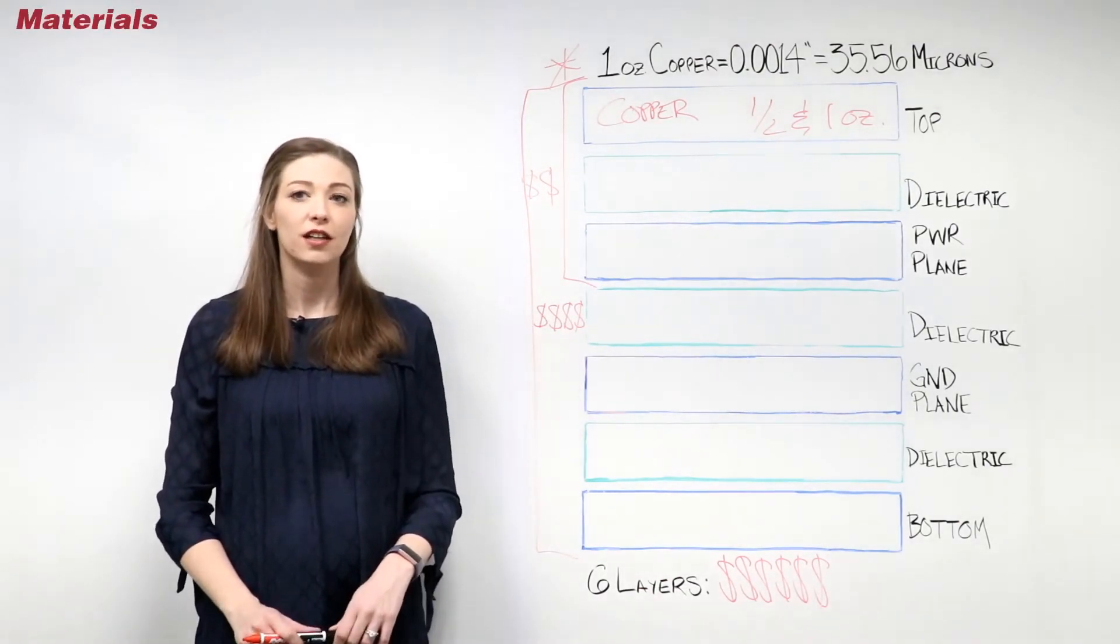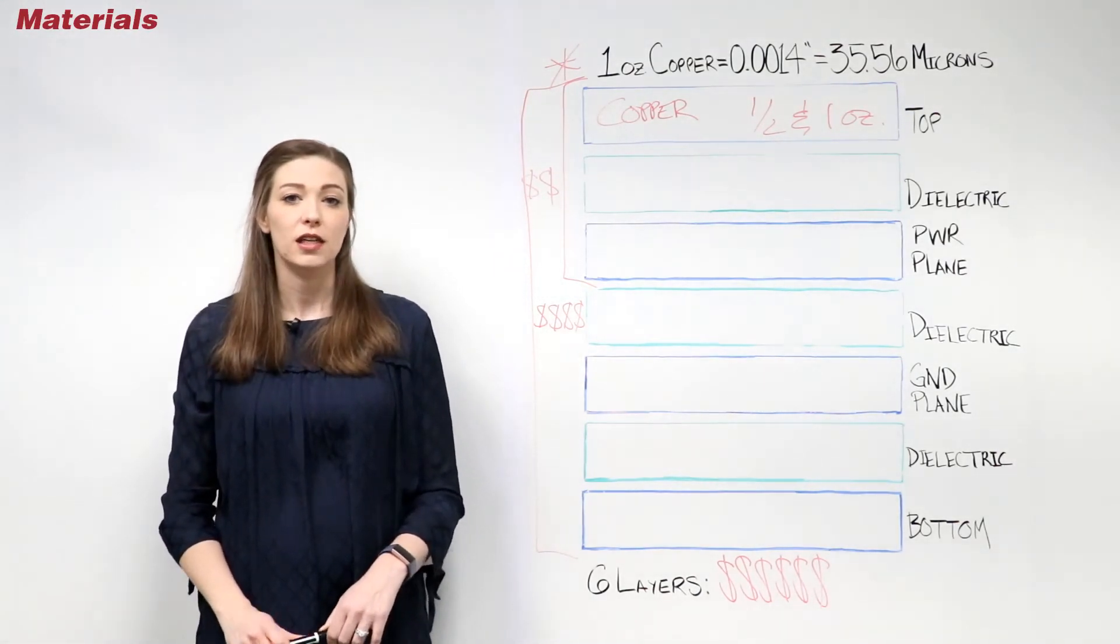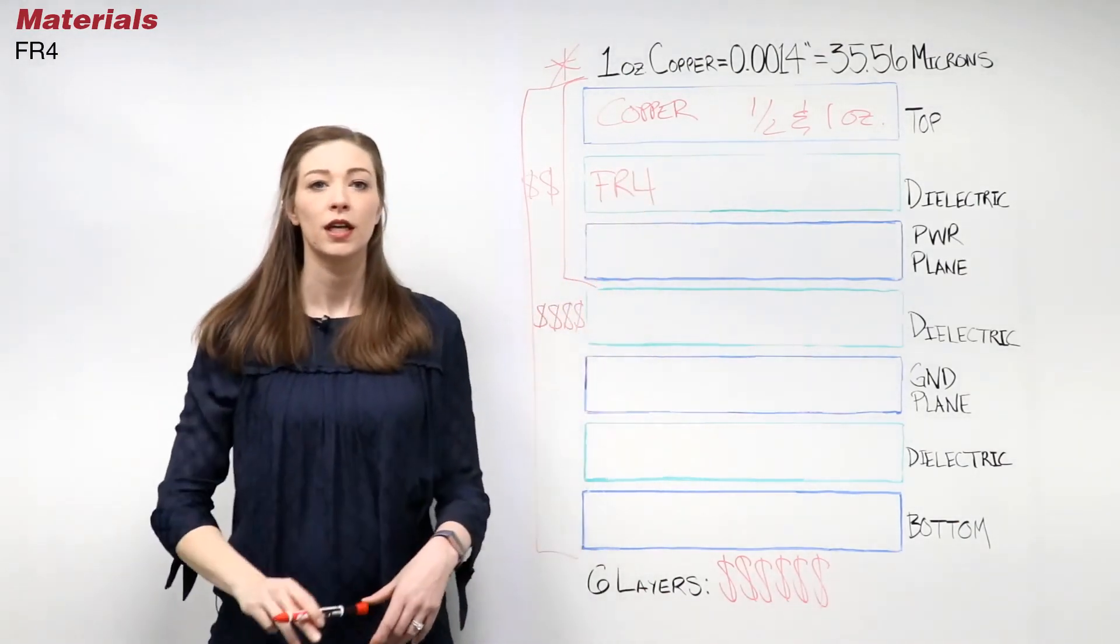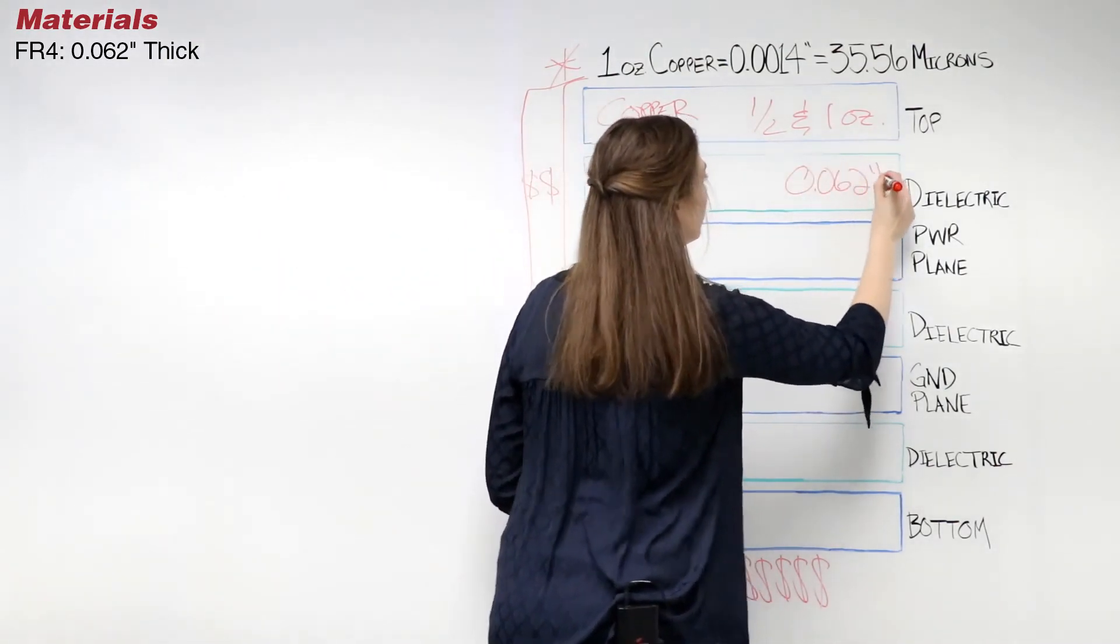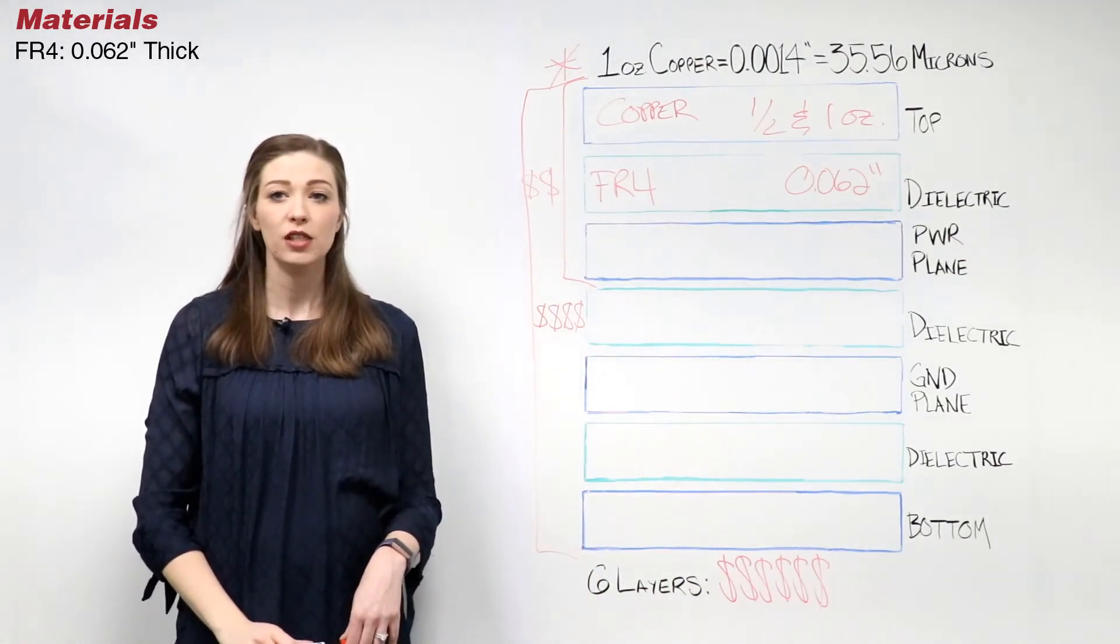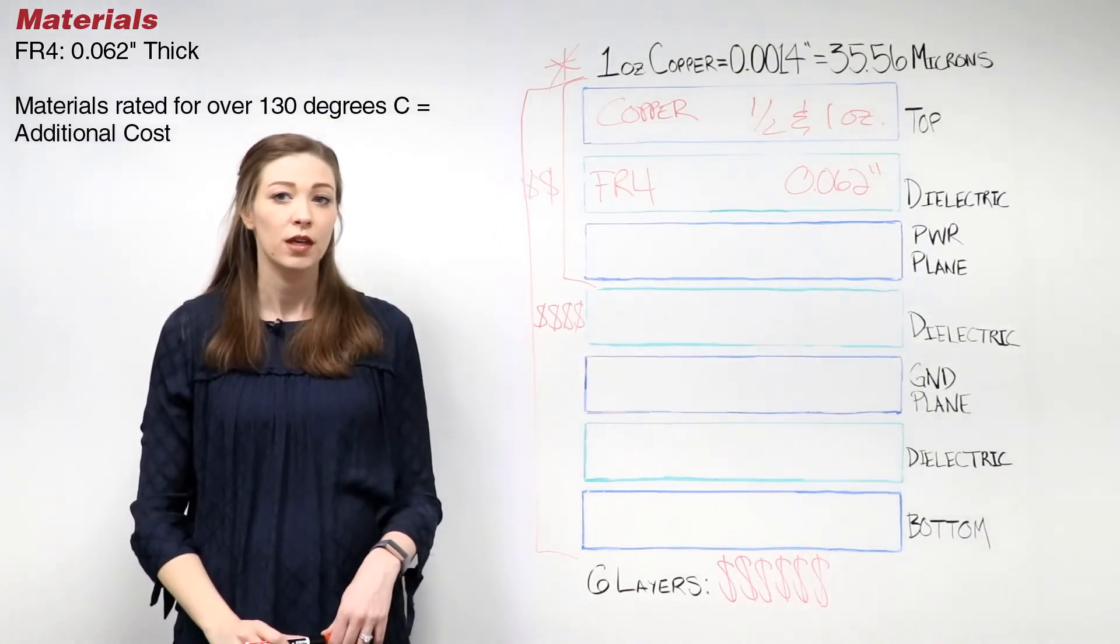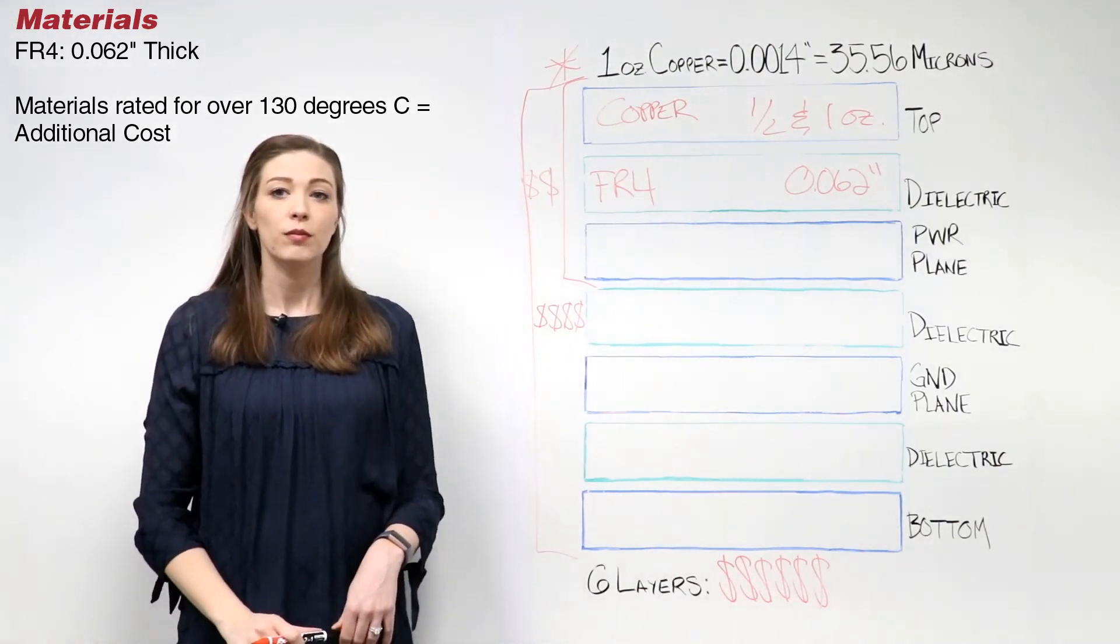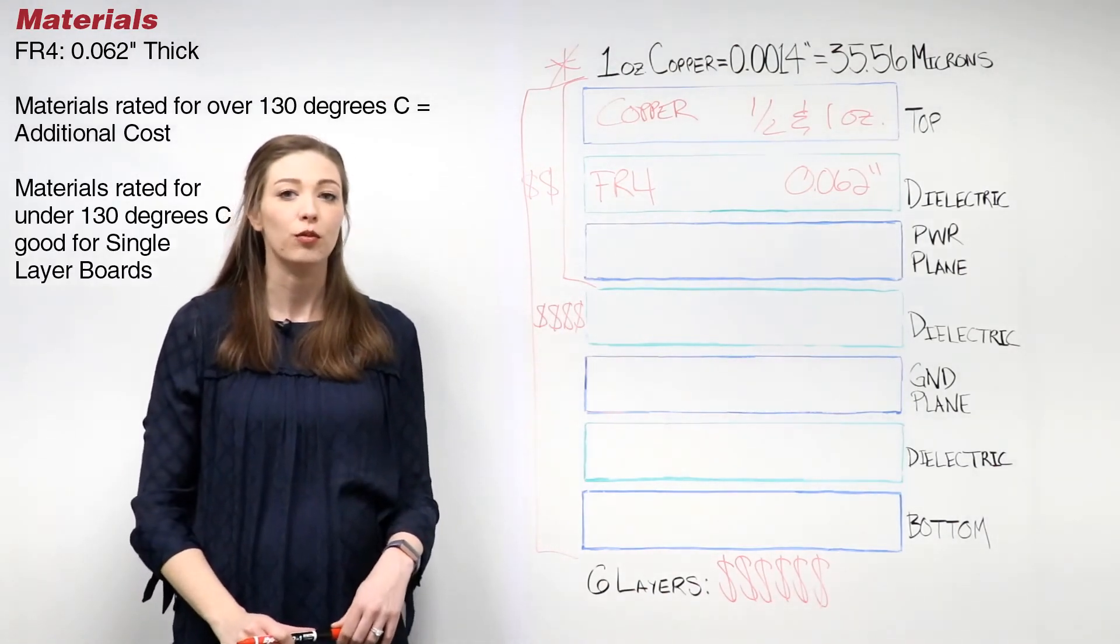The next cost to consider is the material used within your stack up. The most common material used is a glass epoxy known as FR4, and the typical thickness is 0.062 inches. There are multiple cost adders when it comes to material. The most common is material with a higher processing temperature over 130 degrees Celsius. The prices and availability vary, so be sure to check with your fabrication house. Please note that materials rated for under 130 degrees Celsius would be viable for single layer boards.